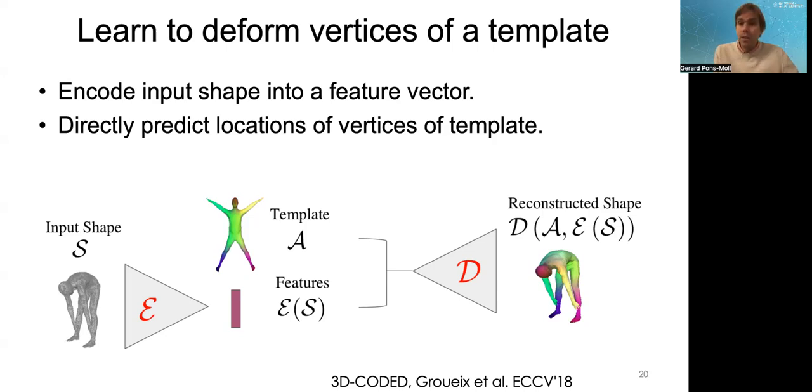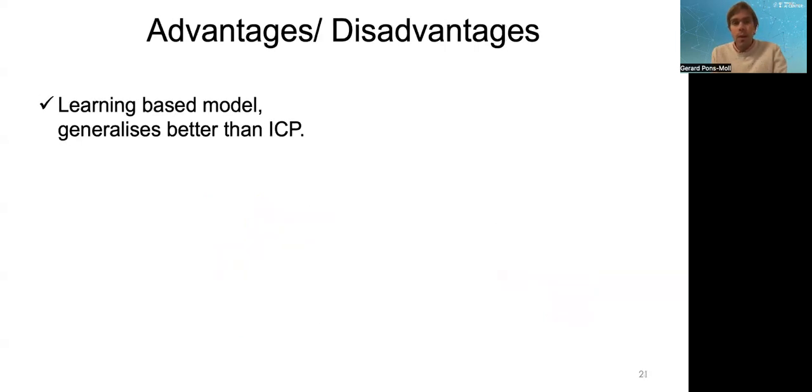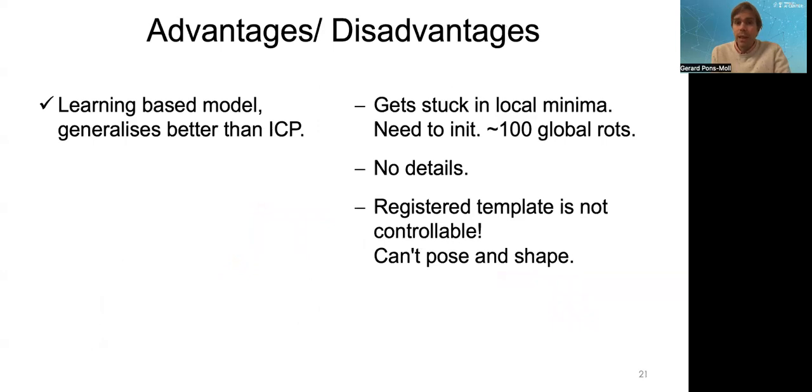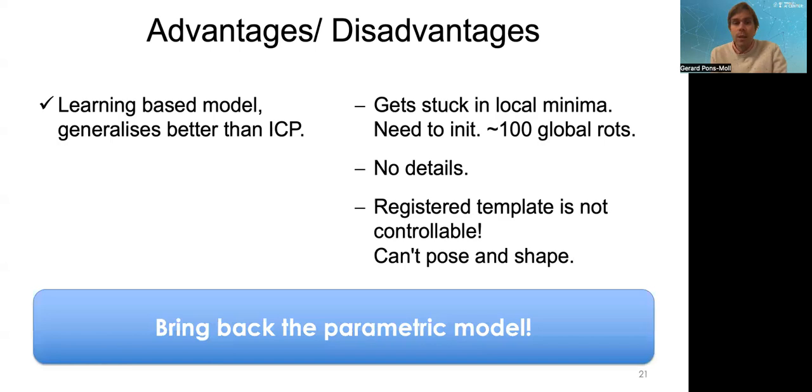You could think that the network is essentially playing the role of the deformation model for the vertices. This f that we've been talking about that deforms the vertices to get closer to the data is now encoded by a neural network. This produces results that are better than ICP for humans because it's learned from data. However, this gets stuck into local minima, and you need at least 100 global rotation initializations in order to make this learned model converge. This model cannot get details from the data, and the registered template is not controllable because it's not the SMPL model. You cannot pose it and shape it. You could compute a SMPL model from it relatively easily, but it's not directly controllable.